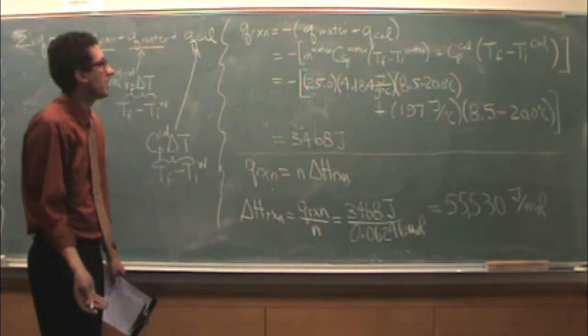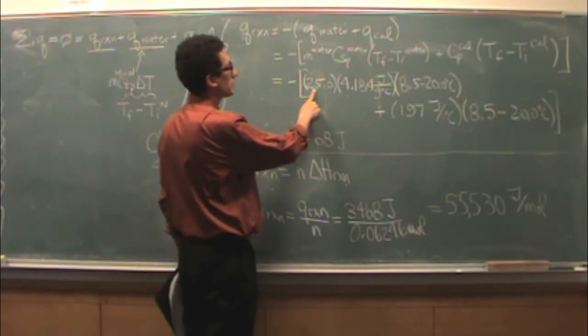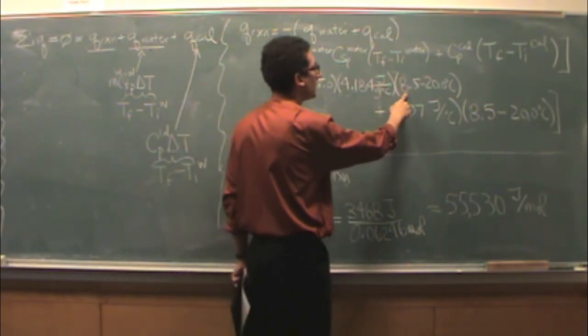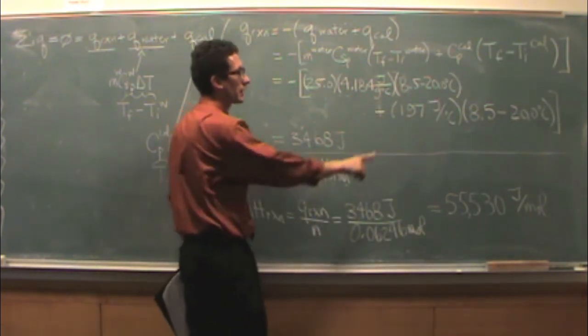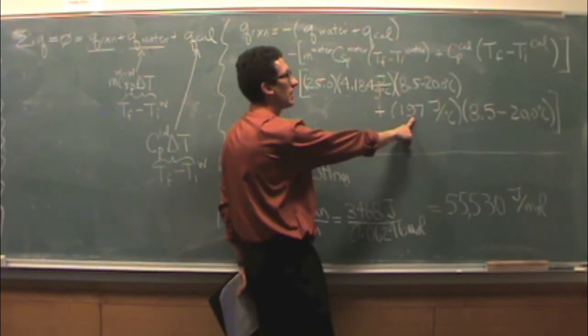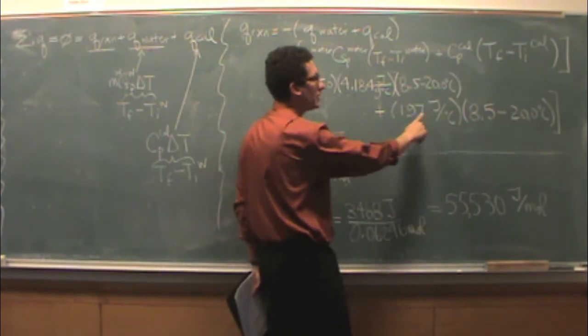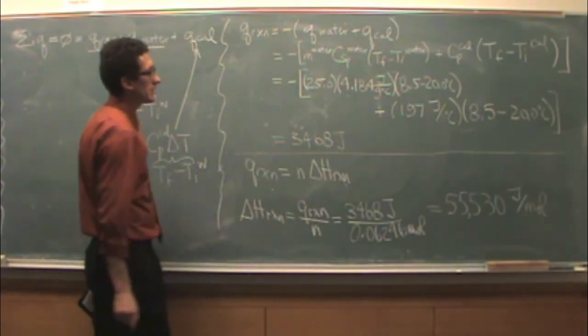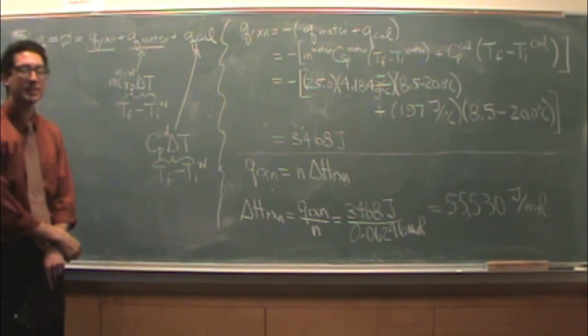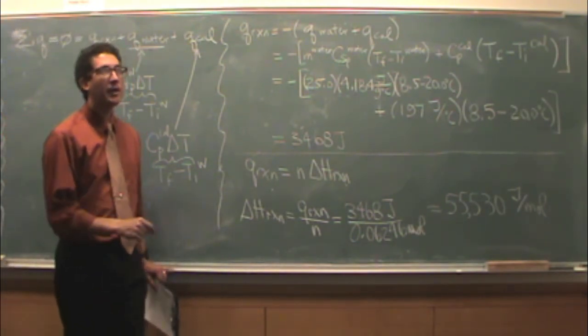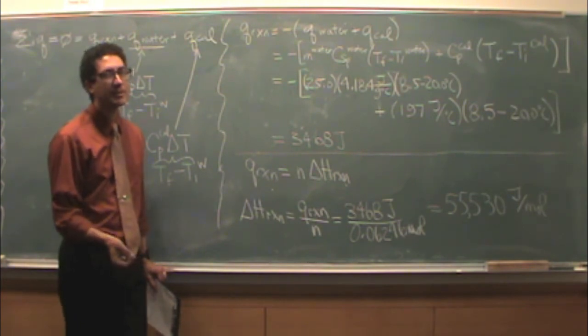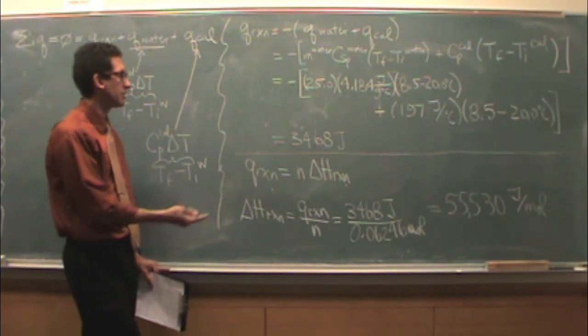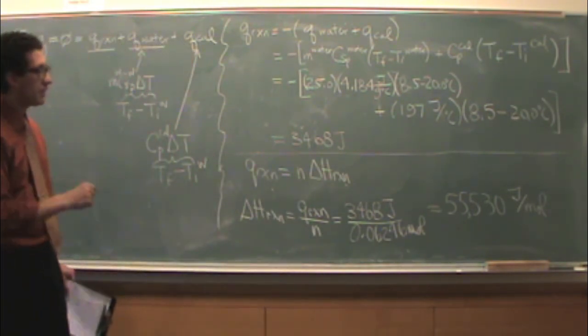We just have to plug in the numbers and we're pretty much there. Here's the mass of water, here's the C_SP of water, and T final minus T initial. For the calorimeter, remember that's the average CP value from part 1, then 8.5 minus 20 for the delta T. In this case, we got 3468 joules. That's a positive number. Positive means it's endothermic. So that's a good thing. That agrees with what we expected for our endothermic reaction.